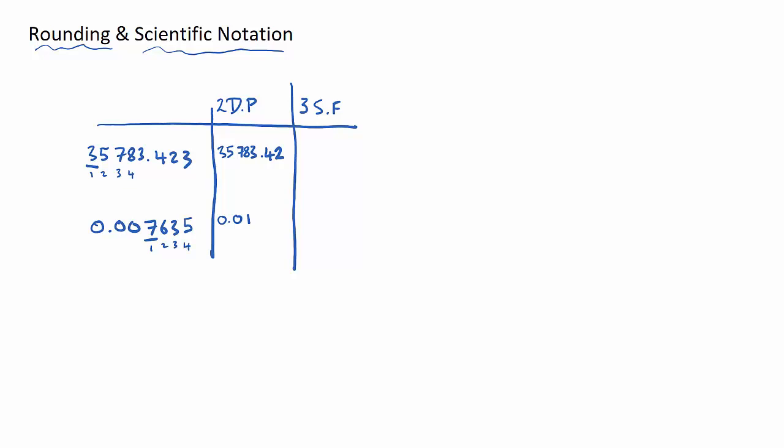Let's round these two numbers to three significant figures. For 35,783.423, the first three significant figures are 3, 5, 7. Does the 7 stay the same or round up? The next digit is 8, which is between 5 and 9, so the 7 rounds up to an 8. I still need to preserve the magnitude — it's a five-digit number in the tens of thousands — so the answer is 35,800.